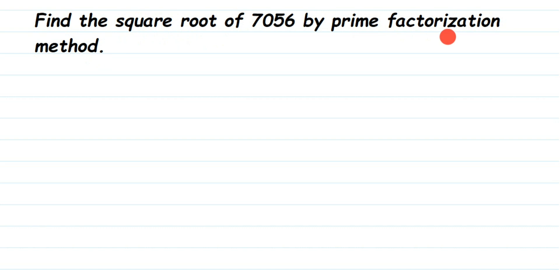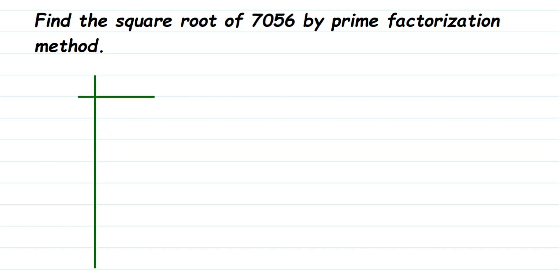To do that, we're going to use a division method — we'll divide this number by prime numbers to get the prime factors. The number is 7056, which is an even number, so we're going to start by dividing it by 2.